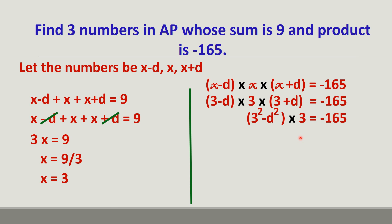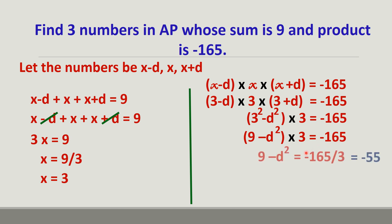Taking 3 to the other side: 9 − d² = −165 / 3 = −55. Then −d² = −55 − 9 = −64, so d² = 64. The minus signs on both sides cancel. Therefore d = √64 = ±8.